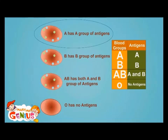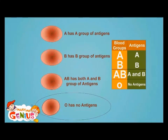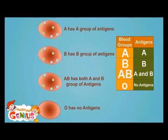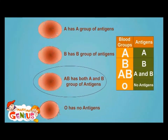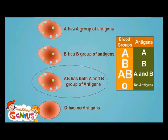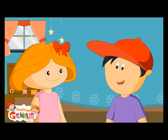So, few people have A-type, few people have B-type, and a few don't have any antigen, so it is called O-type blood. And there are others who have both A and B antigens in their blood — these are called AB type. So there are four types of blood: A, B, AB, and O.